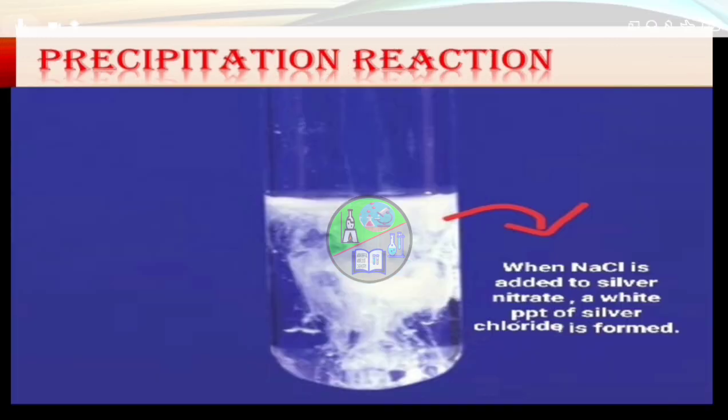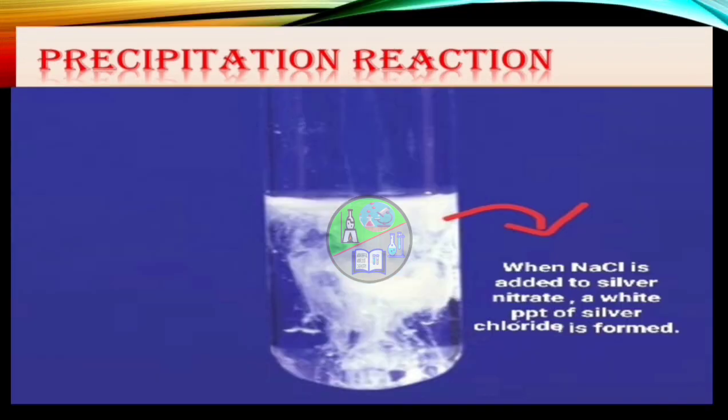Double displacement reaction is of two types. The first is precipitation reaction — a chemical reaction in which an insoluble solid called a precipitate separates from the solution. For example, when sodium chloride is added to silver nitrate, a white precipitate of silver chloride is formed.